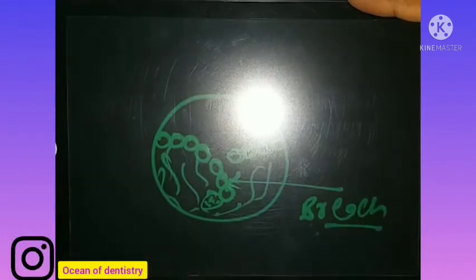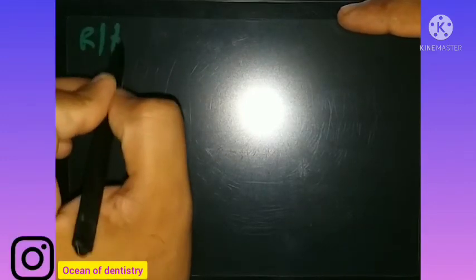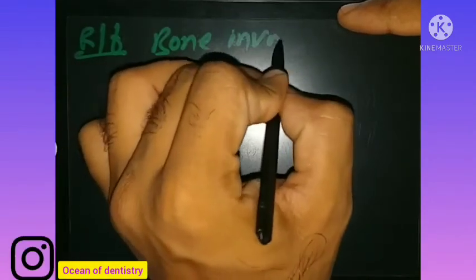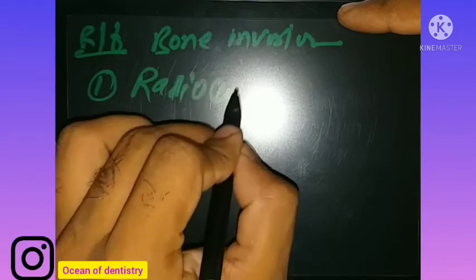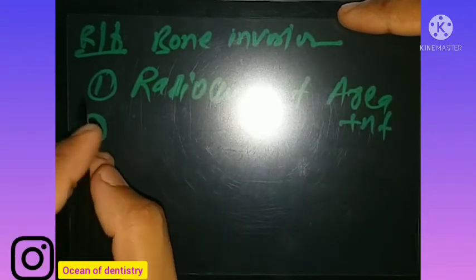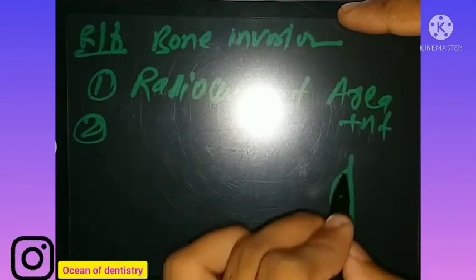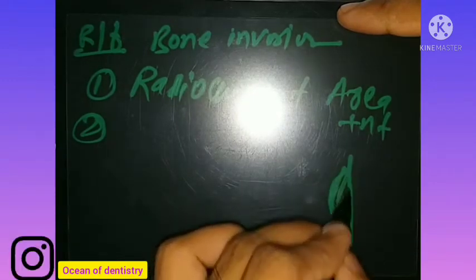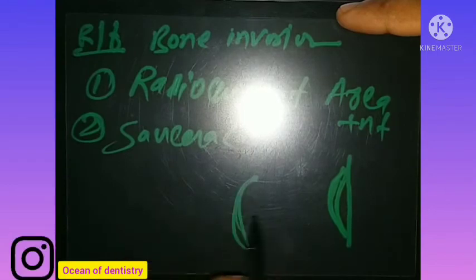This was the histological grading of squamous cell carcinoma. Now regarding the radiographic features of squamous cell carcinoma, you will find bone invasion. A radiolucent area can be present. Saucerization of bone can be seen — meaning the bone is eroded in a saucer-like pattern, and the bone is eaten up.